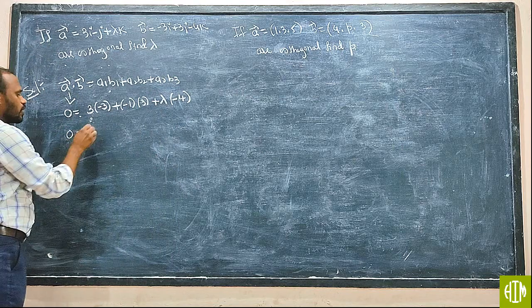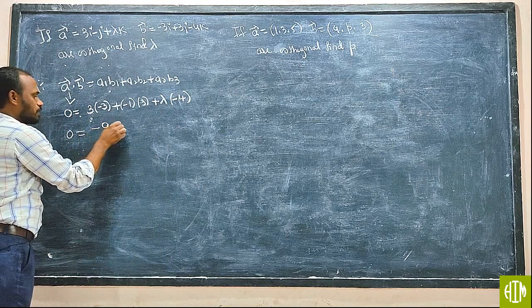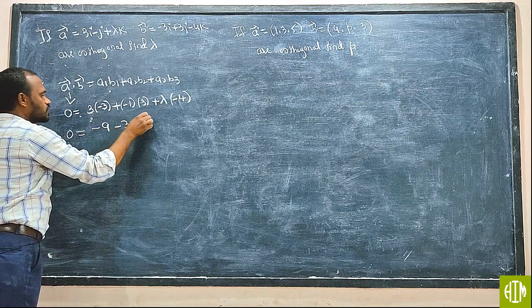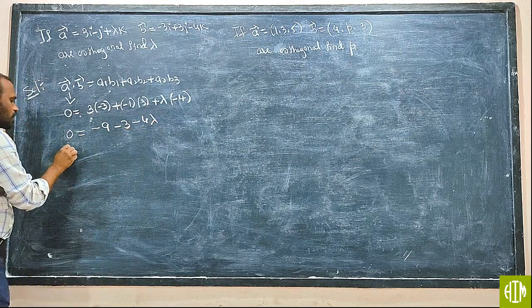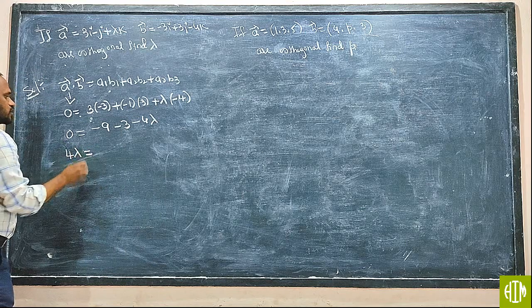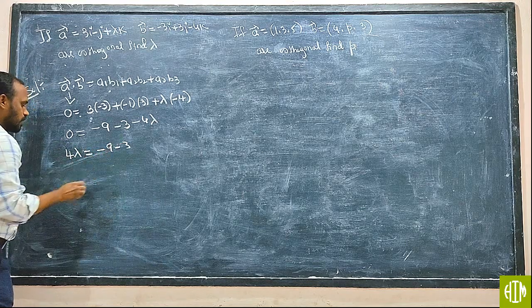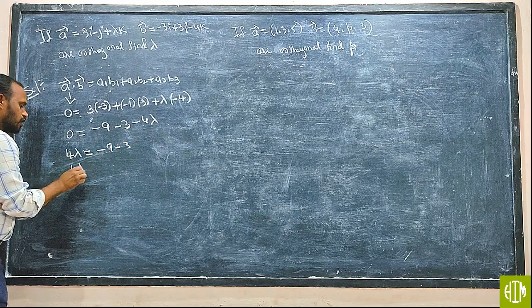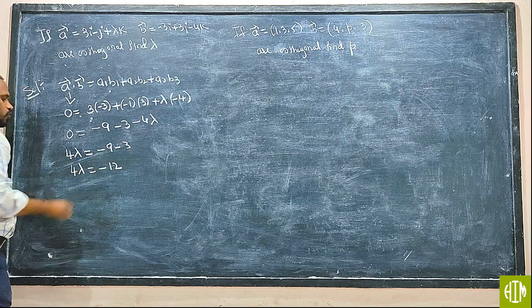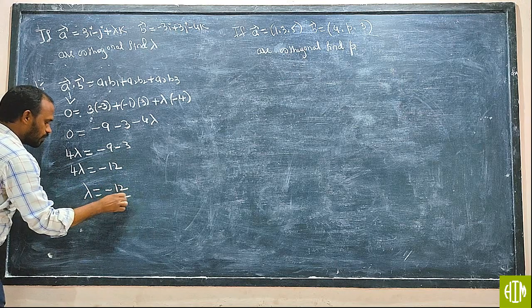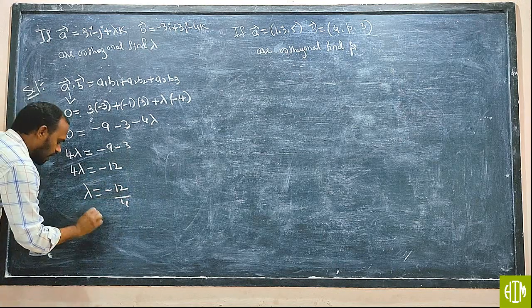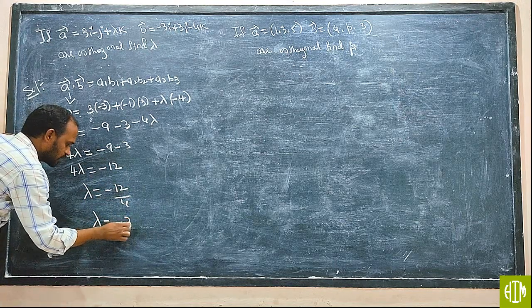0 is equal to minus 9, minus 3, minus 4 lambda. Minus 4 equal to minus 4 lambda J value. Minus 9 minus 3, 4 lambda J value, minus 12 lambda J value. Minus 12, Y value 4, lambda J value minus 3.